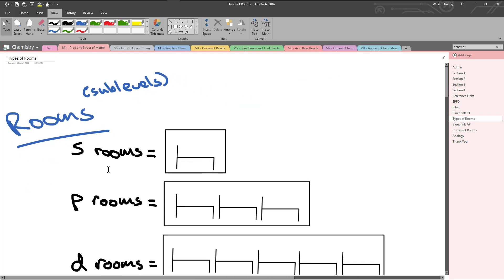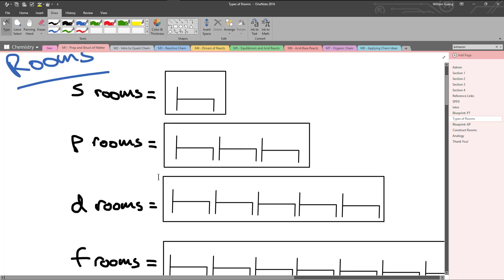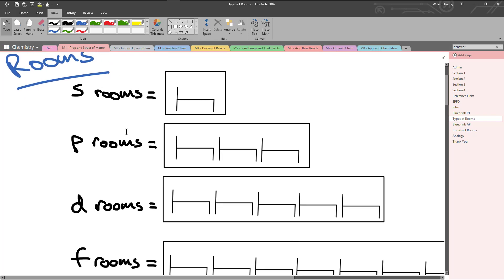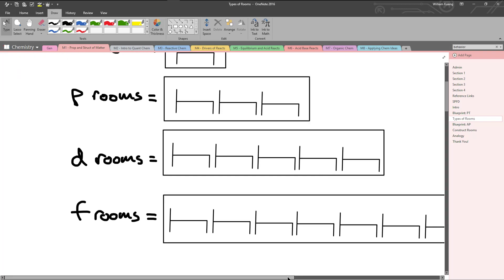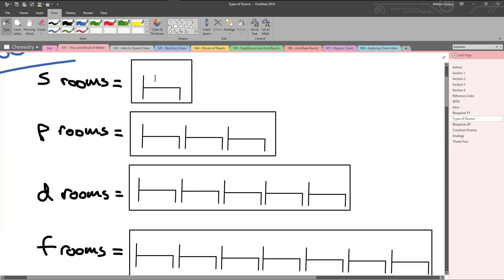Let's take a closer look at rooms. The rooms which represent the sublevels come in different types. We have S rooms, P rooms, D rooms, and F rooms. The S rooms can only hold one bed. The P rooms can only hold three beds. The D rooms can hold five beds. And the F rooms can hold seven beds. What this means is that each bed sleeps two electrons. So if you have one bed, you can have two electrons living in this room.